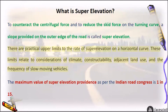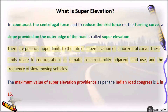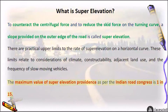There are practical upper limits to the rate of super elevation on a horizontal curve. These limits relate to considerations of climate, constructability, adjacent land use, and the frequency of slow moving vehicles. The maximum value of super elevation as per the Indian Road Congress is 1 in 15.